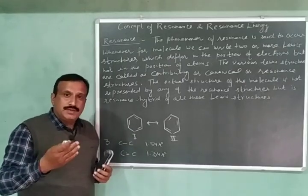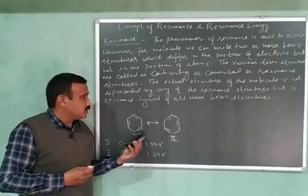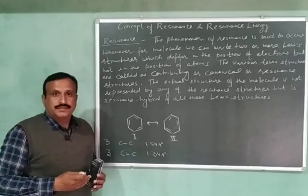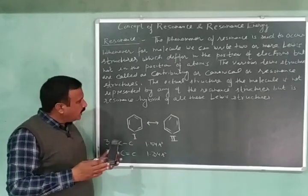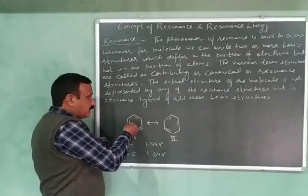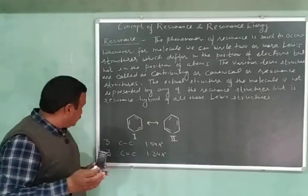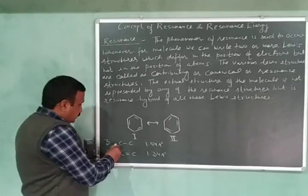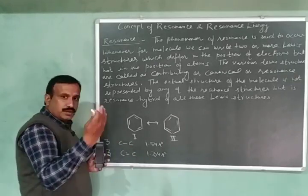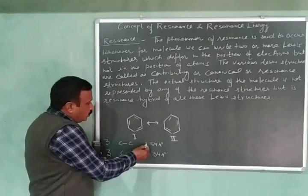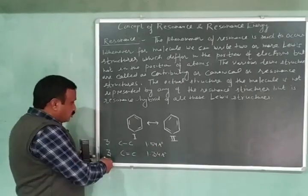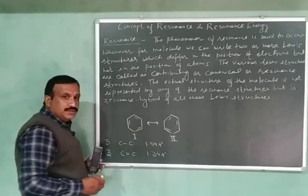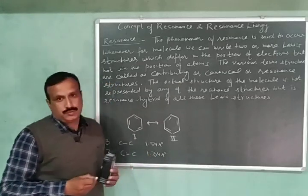Benzene is represented by two Lewis structures, given by Kekulé. If we closely observe these two structures, we will find that in these structures we have three carbon-carbon single bonds, with a bond length of 1.54 angstroms, and three carbon-carbon double bonds, with a bond length of 1.34 angstroms.